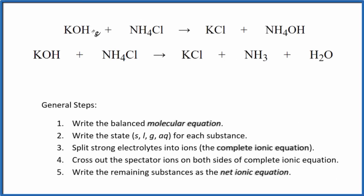In this video, we'll write the balanced net ionic equation for potassium hydroxide plus ammonium chloride. So when we put potassium hydroxide and ammonium chloride together, we first get KCl plus NH4OH.